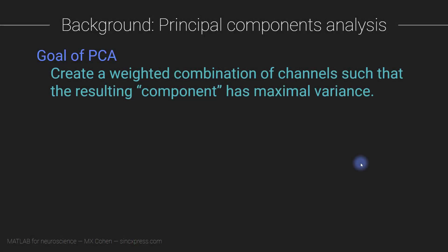Now that we have our time series data, we are ready to do some analyses. I'm going to show you how to implement a principal components analysis, or PCA, on time series data. PCA is a multivariate dimension reduction method that finds a weighted combination of channels — or in our case, the identified cell bodies — such that the resulting components of this weighted combination maximize variance.